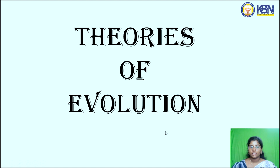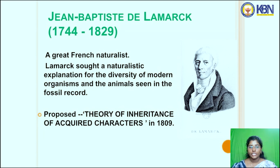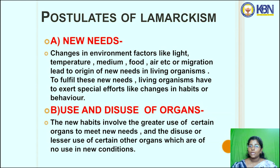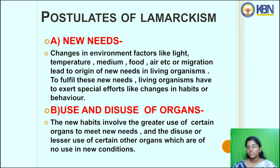Next are the theories of evolution. Lamarck was a great naturalist who sought a naturalistic explanation for the diversity of modern organisms and the animals seen in the fossil record. He proposed the Theory of Inheritance of Acquired Characters in 1809. He postulated four main things: new needs, use and disuse of organs, inheritance of acquired characters, and speciation.